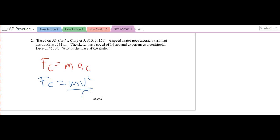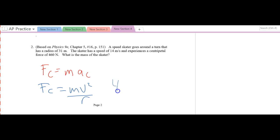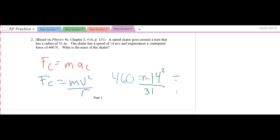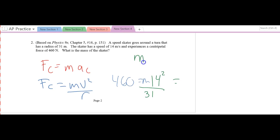It's a pretty straightforward plug and chug problem. So that is 460 newtons equals the mass, which I don't know, times velocity squared, which gives me 14 squared divided by r, and r is 31 meters. All those are the correct units. You do your algebra, and we get 460 times 31 divided by 14 squared. And I end up with a mass equaling 72.8 kilograms.